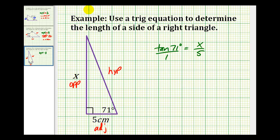Write it as a proportion, and now cross-multiply. X times 1 equals 5 times tangent 71 degrees.